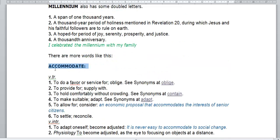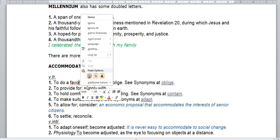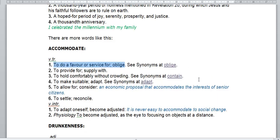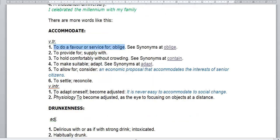Accommodate. Double c. Double m. It is a verb. A transitive verb. It means to do a favour or service for or oblige. You can also look at the synonym oblige. It also means to adapt yourself to become adjusted. For example, it is never easy to accommodate the social changes to adapt. Or an economic proposal that accommodates the interest of senior citizens. That allows, that considers.